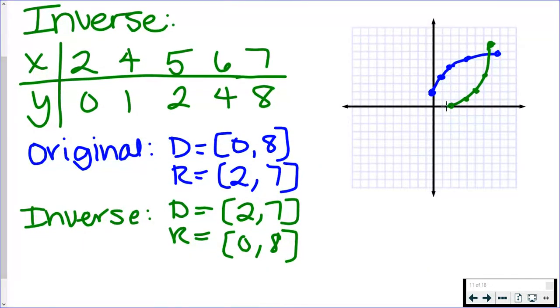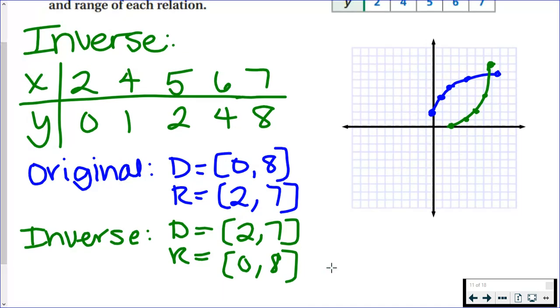Your y values start at 0 and go up to 8, so the range is from 0 to 8. Notice that was the domain of the original. All you have to do is switch them in order to have your domain and range for both.